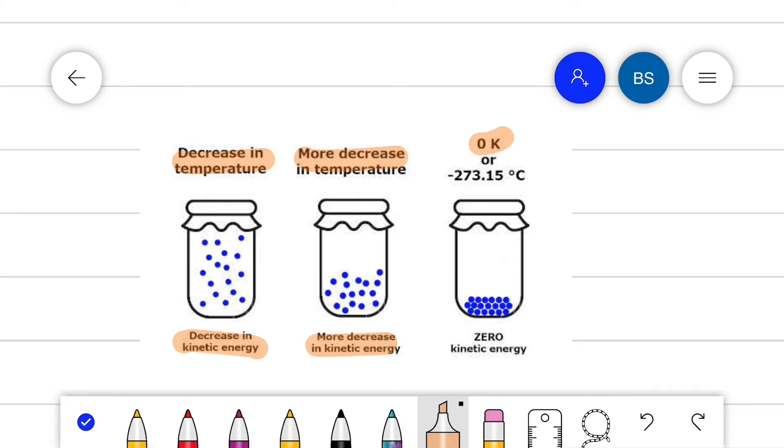So, at zero Kelvin, there is no kinetic energy. Or we can say, no more kinetic energy or kinetic motion implies there is no more temperature. And this is known as the absolute zero temperature.